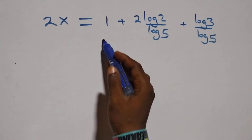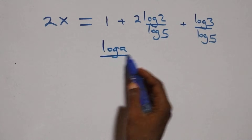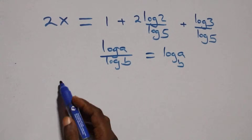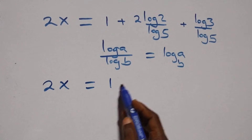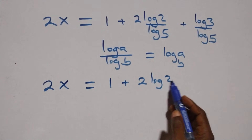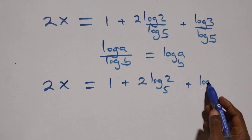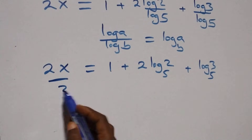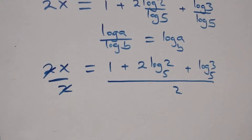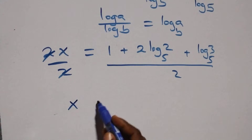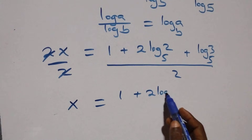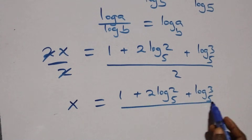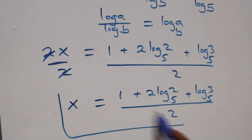Next we apply the change of base rule: log a over log b equals log a to base b. So this becomes 2x equals 1 plus 2 log 2 base 5, plus log 3 base 5. Dividing both sides by 2, the 2s cancel and we get x equals 1 plus 2 log 2 base 5 plus log 3 base 5, all over 2. That is the value of x.